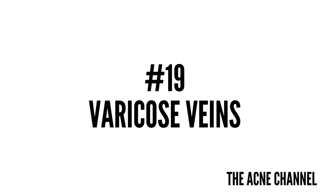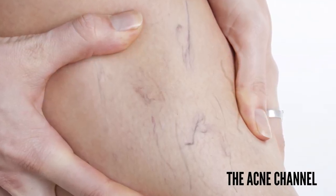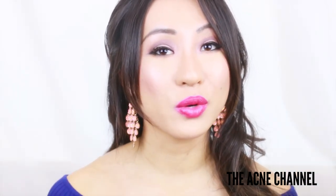Number nineteen is varicose veins — these are large blood vessels that appear as blue bulges beneath the skin. And term number twenty is whitehead, which are basically closed acne lesions caused by a clogged hair follicle.